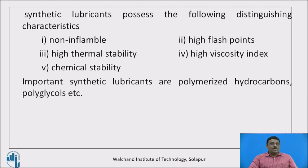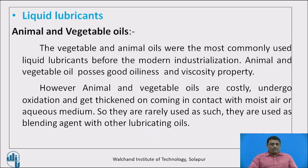The important synthetic lubricants are polymerized hydrocarbons, polyglycols, etc. Now, liquid lubricants — one example is animal and vegetable oils. Vegetable and animal oils were the most commonly used liquid lubricants before modern industrialization. They possess good oiliness and viscosity properties. However, animal and vegetable oils are costly and undergo oxidation, getting thickened on coming in contact with moist air or aqueous medium, so they are rarely used as such. They are used as blending agents with other lubricating oils.